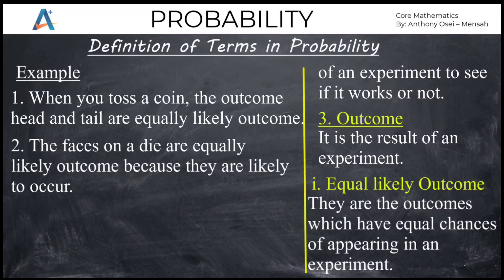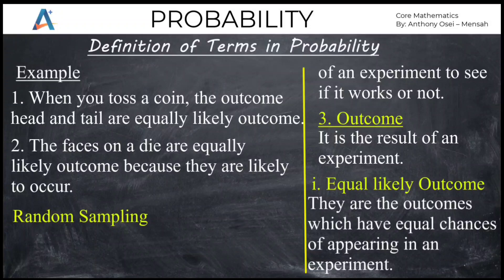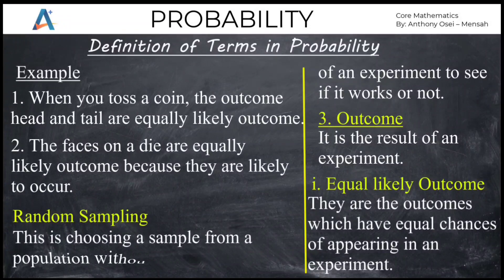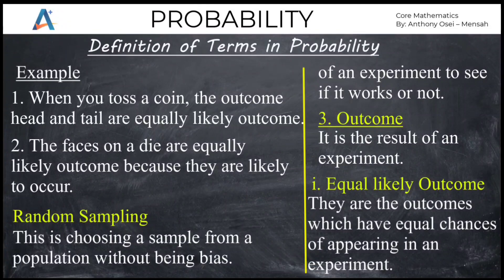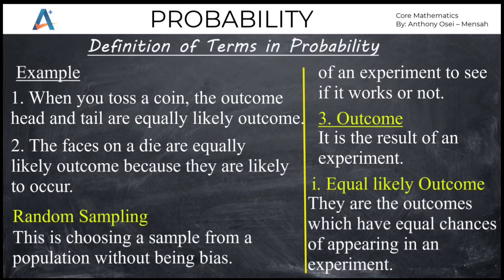The next terminology is random sampling. Random sampling is choosing a sample from a population without being biased. You take some portion out of the whole and use it to represent the entire thing. Random sampling is when you take a portion of a whole to represent the whole.